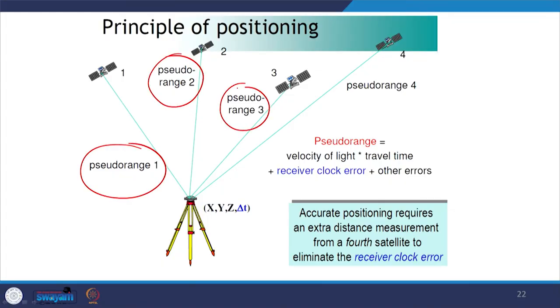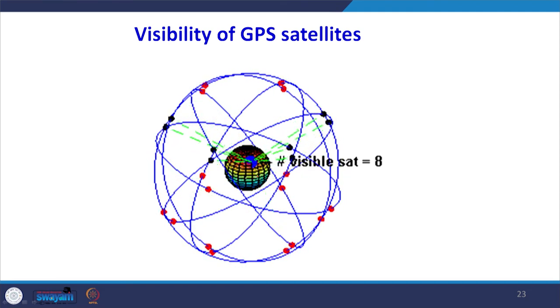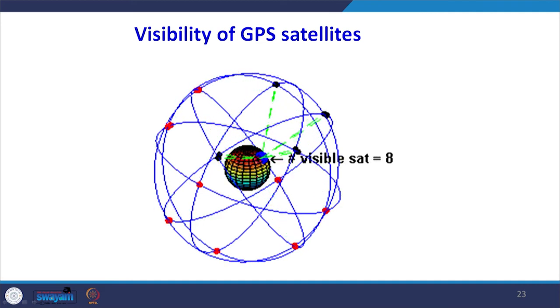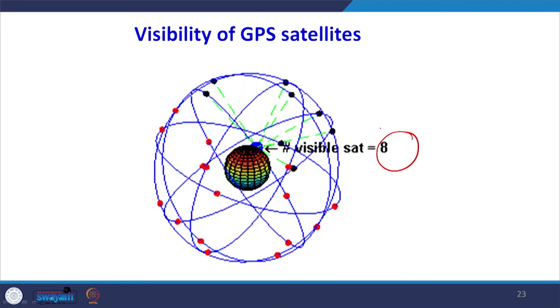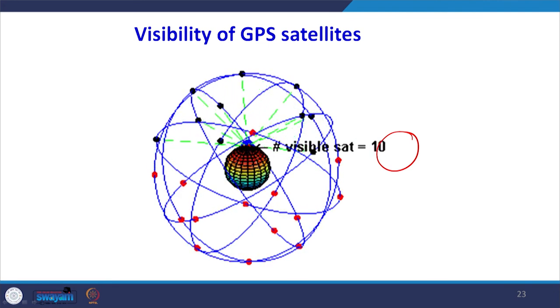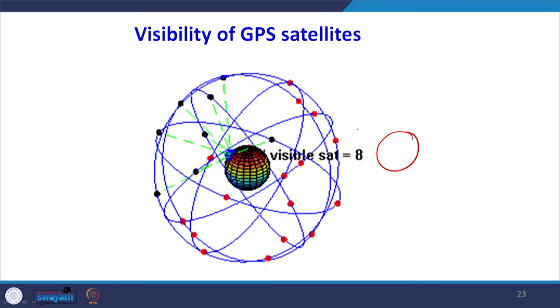The principle of positioning is that 4 satellites send pseudo ranges to the receiver system, which minimizes the error and determines the accurate position of the point, giving x, y, and z coordinates accurately for mapping purposes. An animation shows how many satellites are visible from a particular location — since satellites are continuously moving, the number of visible satellites changes as both position and satellite constellation change.